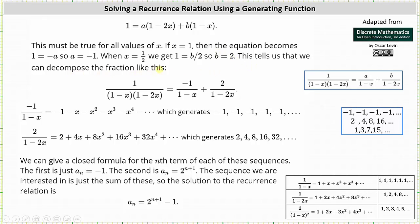This tells us we can decompose the fraction as follows. The generating function equals -1/(1 - x) + 2/(1 - 2x). We should recognize these generating functions: -1/(1 - x) is a generating function for a sequence of -1s, and 2/(1 - 2x) is 2 times the generating function 1/(1 - 2x), which corresponds to 2 times the sequence 1, 2, 4, 8, ..., giving us the sequence 2, 4, 8, 16, 32, ...